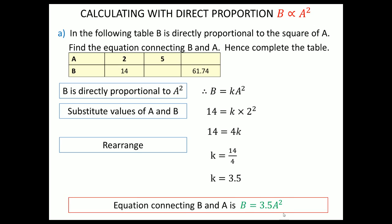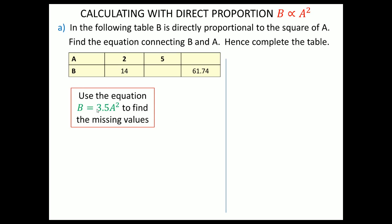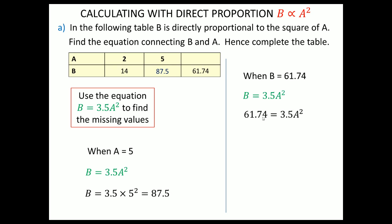The general equation is b = 3.5a². Remember it's a squared throughout — you might be used to writing b = ka, but remember what the general form was at the start. To complete the table: substituting a = 5, b = 3.5 × 5² = 3.5 × 25 = 87.5. Substituting b = 61.74: 61.74 = 3.5a², so a² = 17.64, and taking the square root gives a = 4.2.